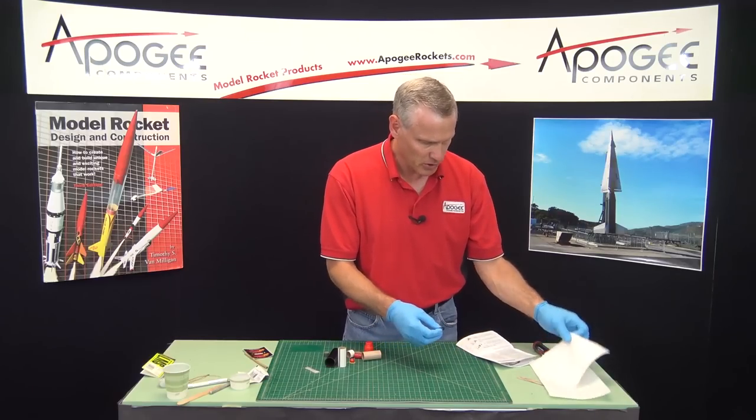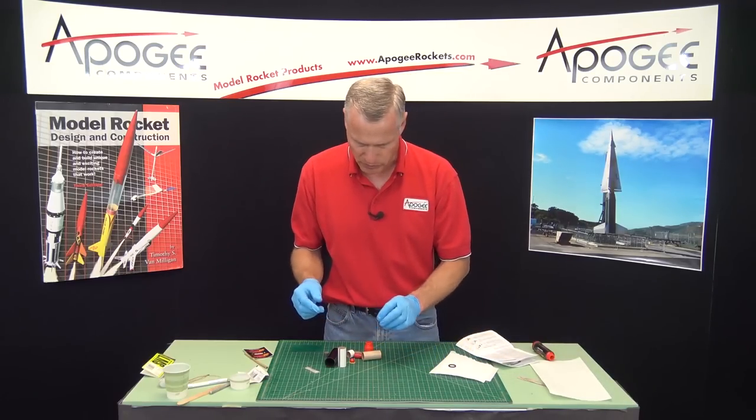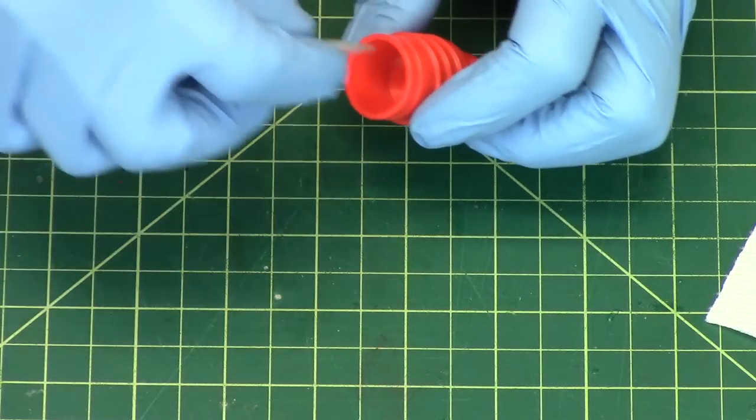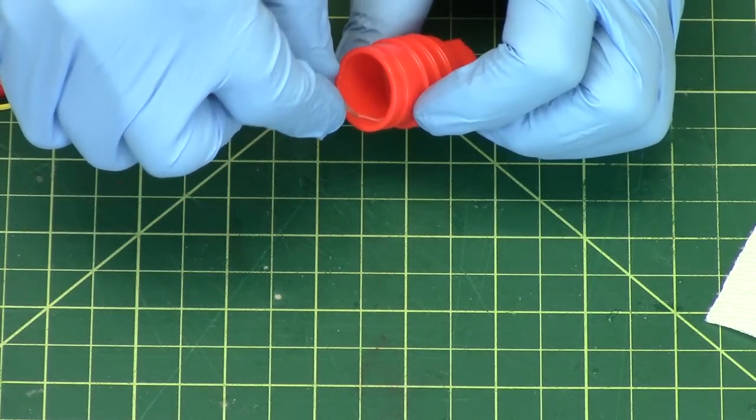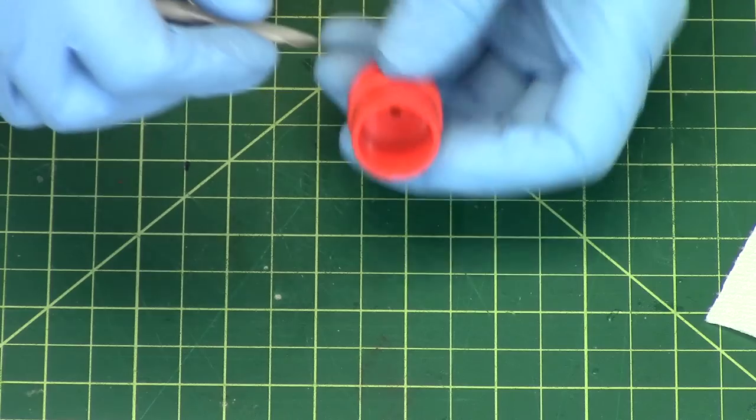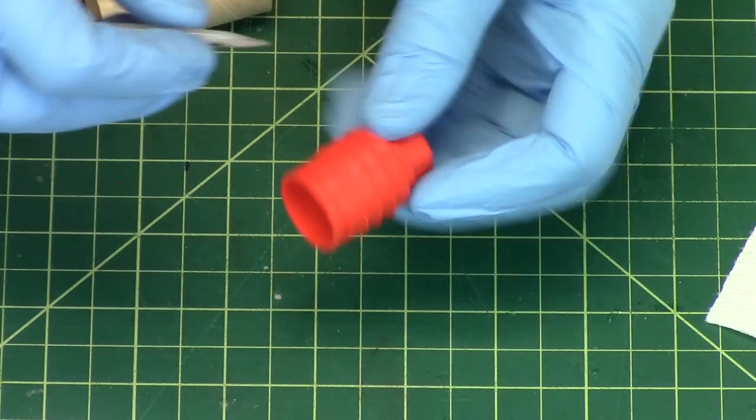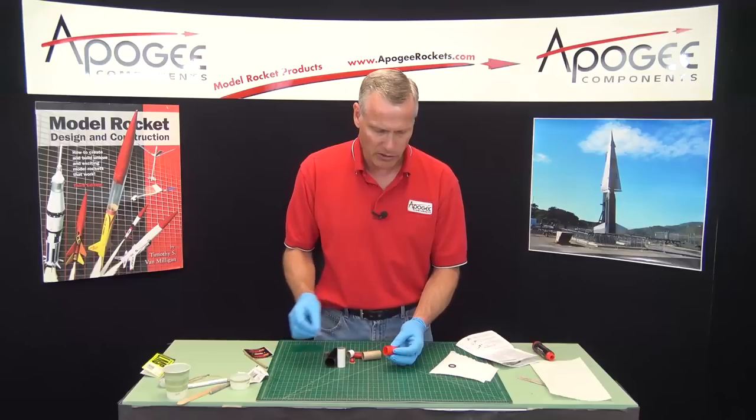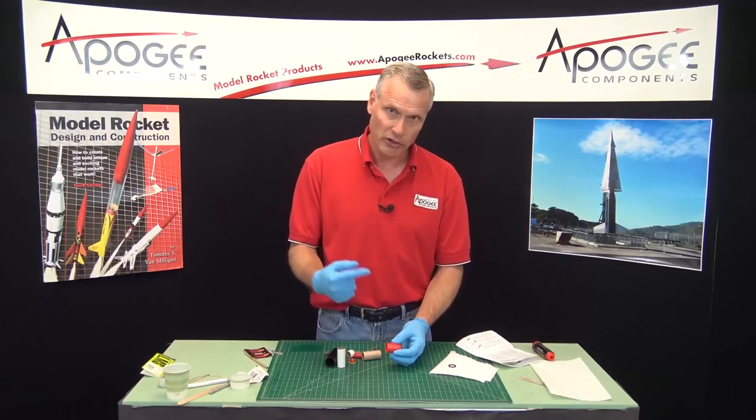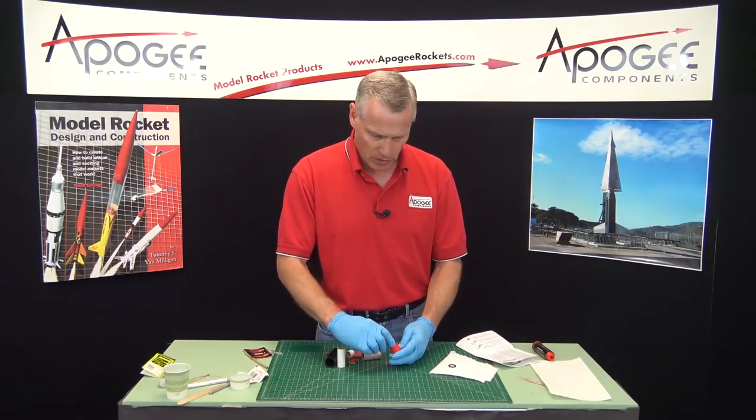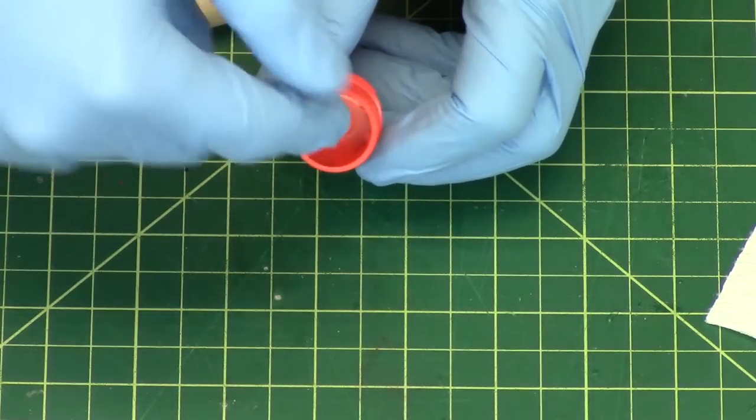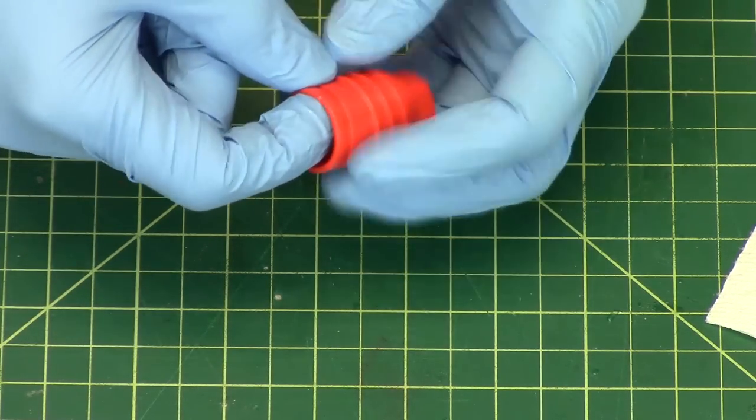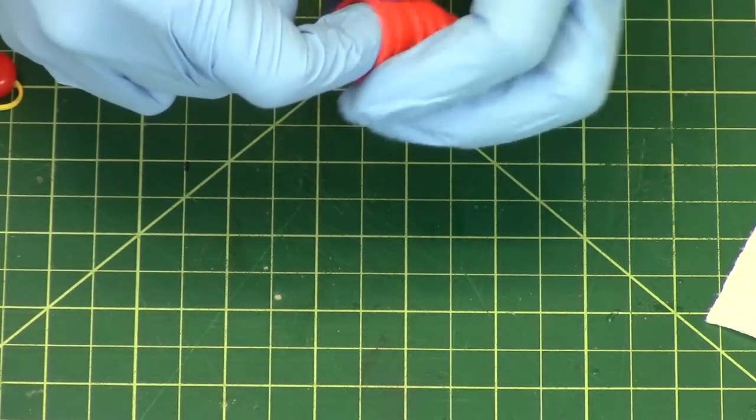And I'm going to stick it on a paper towel so that I don't get my table messed up. And then later in the instructions it says to put some grease on the inside of the red cap. The cap color can change varying on the motor. But this is the forward closure because it's on the forward end towards the nose cone. But just when you smear it around, make sure you don't get any on the bottom. You only want it on the sides. Just like that.